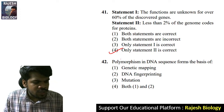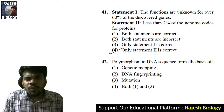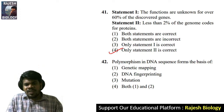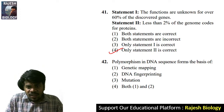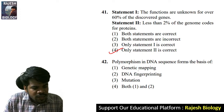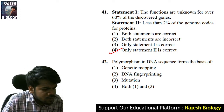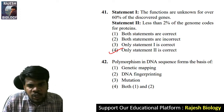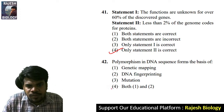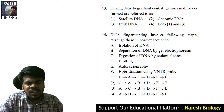Question 42, from the Human Genome Project: polymorphism in DNA sequence forms the basis of both genetic mapping and DNA fingerprinting. Jnaneshwari, you are right — both genetic mapping and DNA fingerprinting.